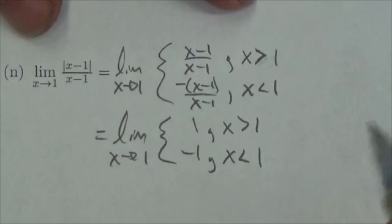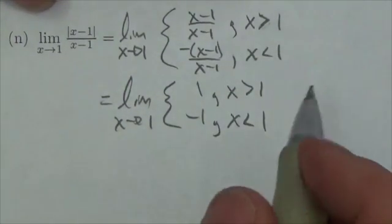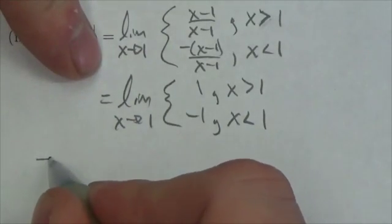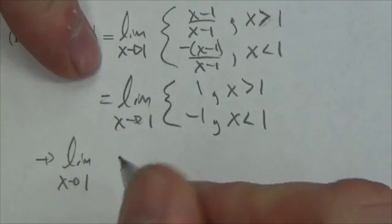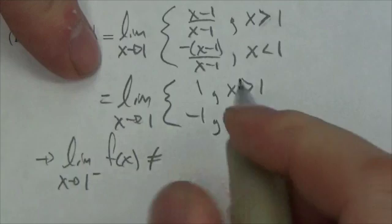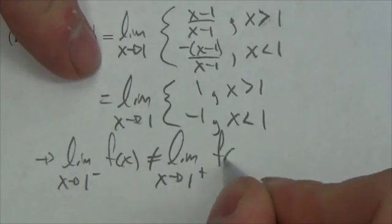Now in this case, notice that the limit—okay, note in this case that the limit as x approaches one from the left of my function does not equal the limit as x approaches one from the right of my function.